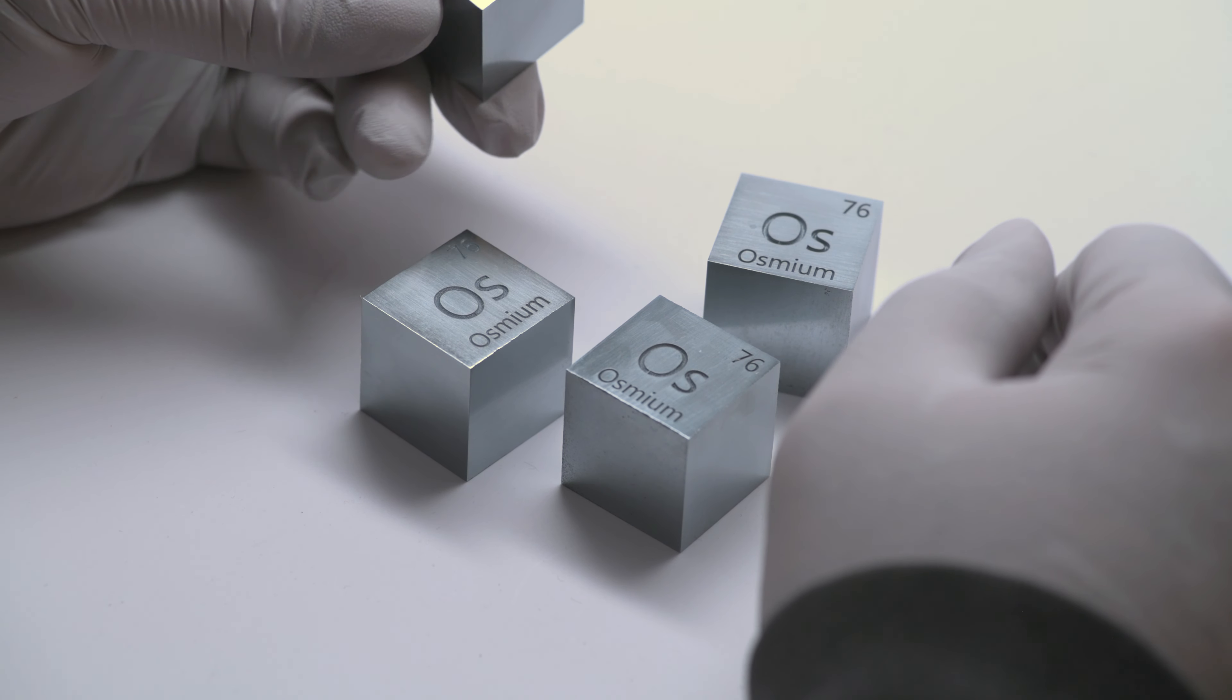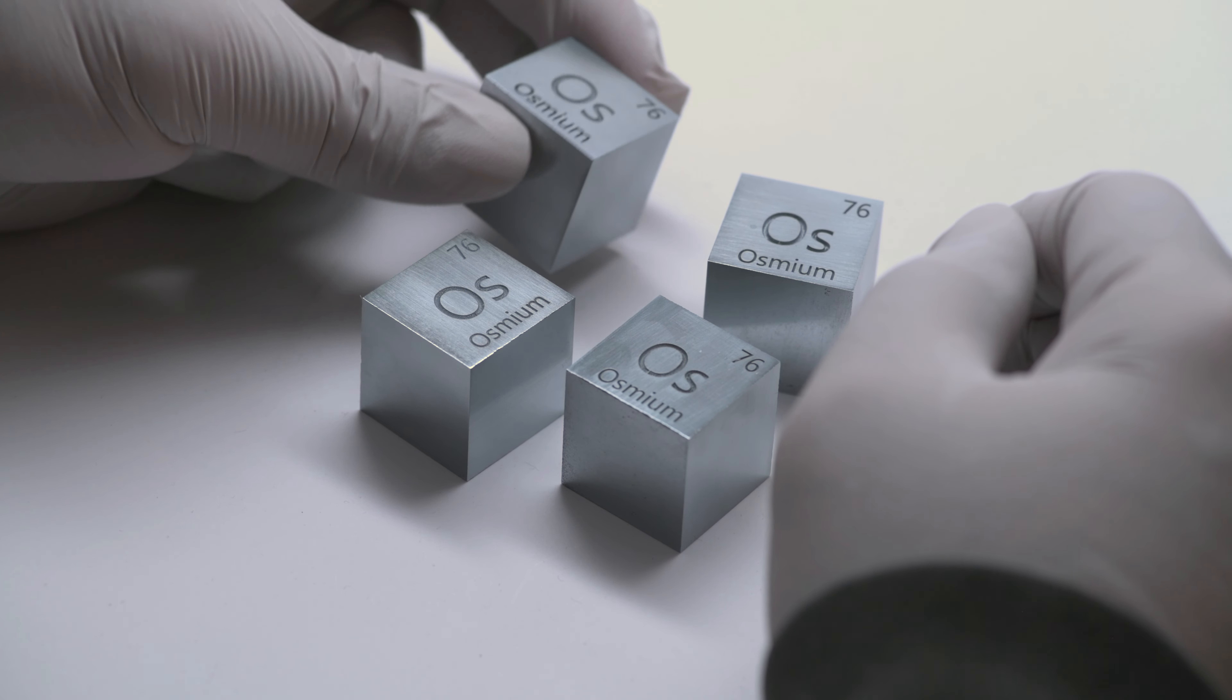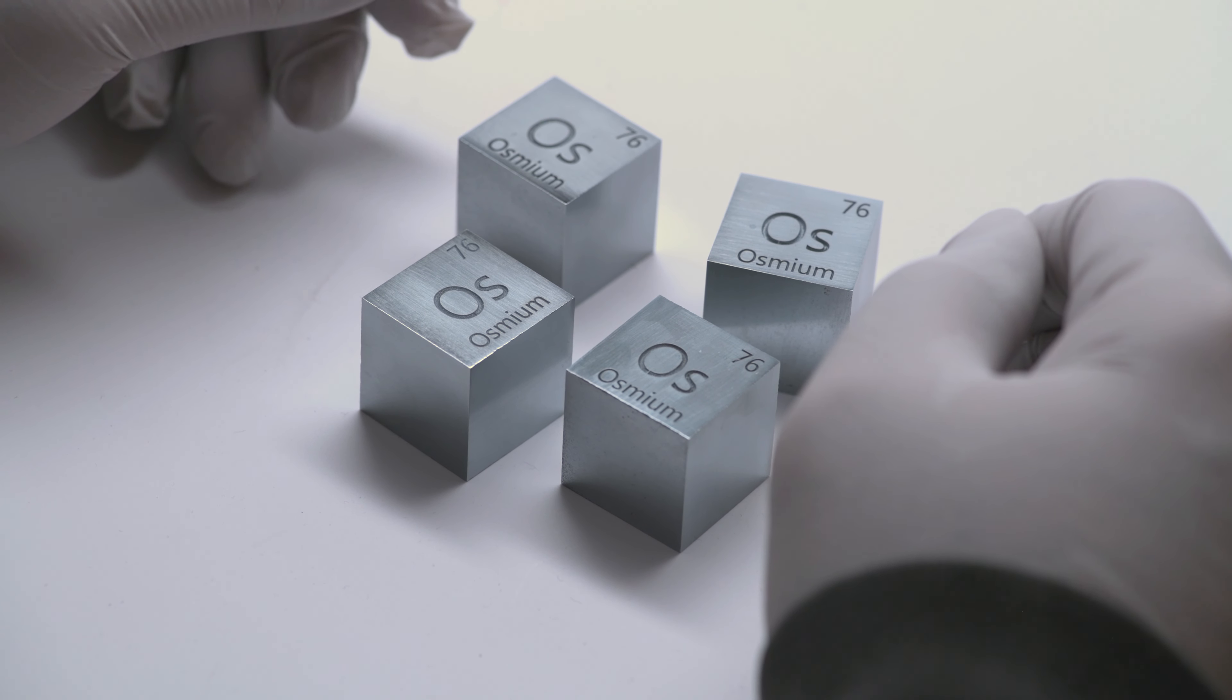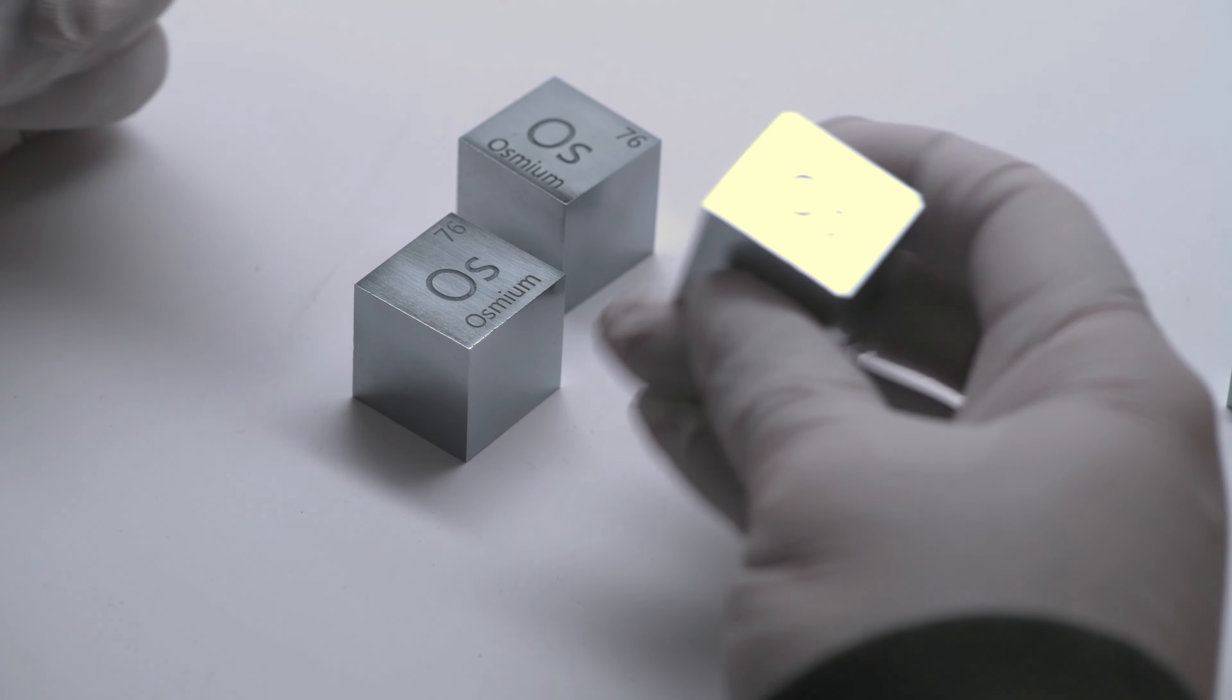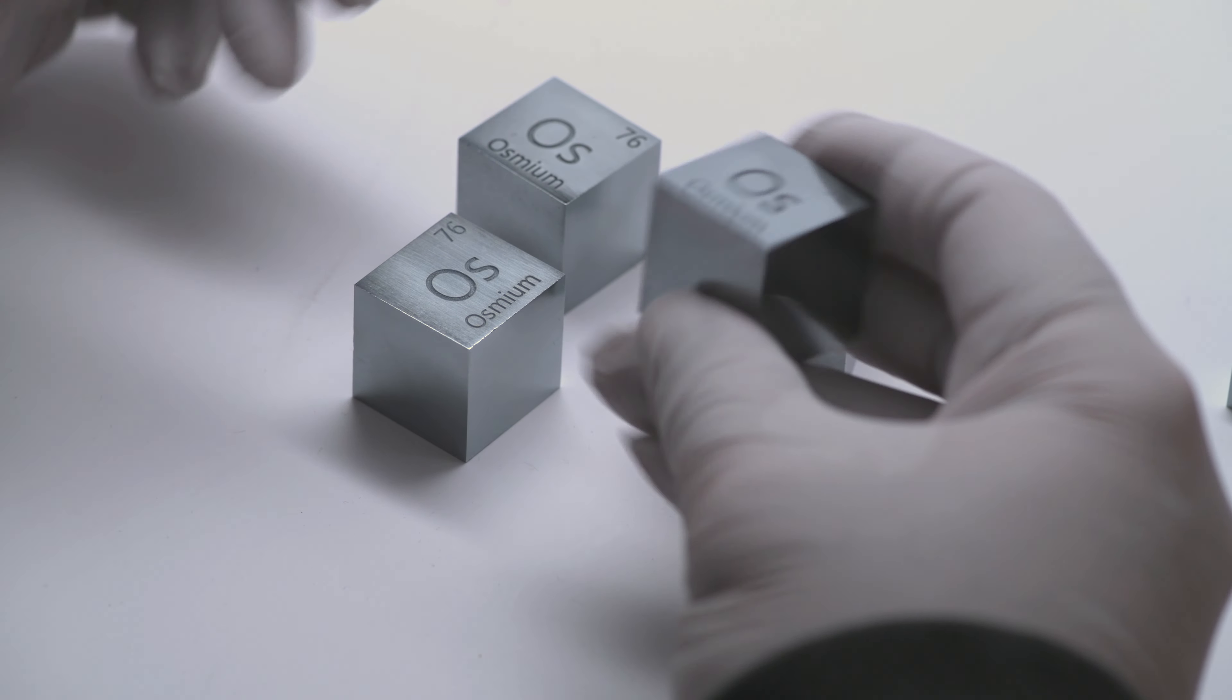This is 22.6 grams per cubic centimeter, while tungsten only comes in at 19.1. In the hand, this feels like the earth is pulling it down towards you.